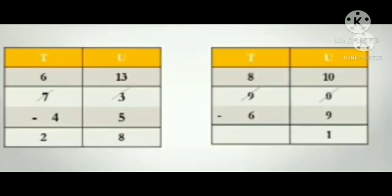Now let's start the second sum: 90 minus 69. Look at the numbers in the units place. You can see 0 minus 9. Is 0 minus 9 possible? No. Because 0 is the smallest — nothing is there. You cannot subtract 9 from 0. That is not possible at all. So what you have to do? You have to borrow from the tens place.